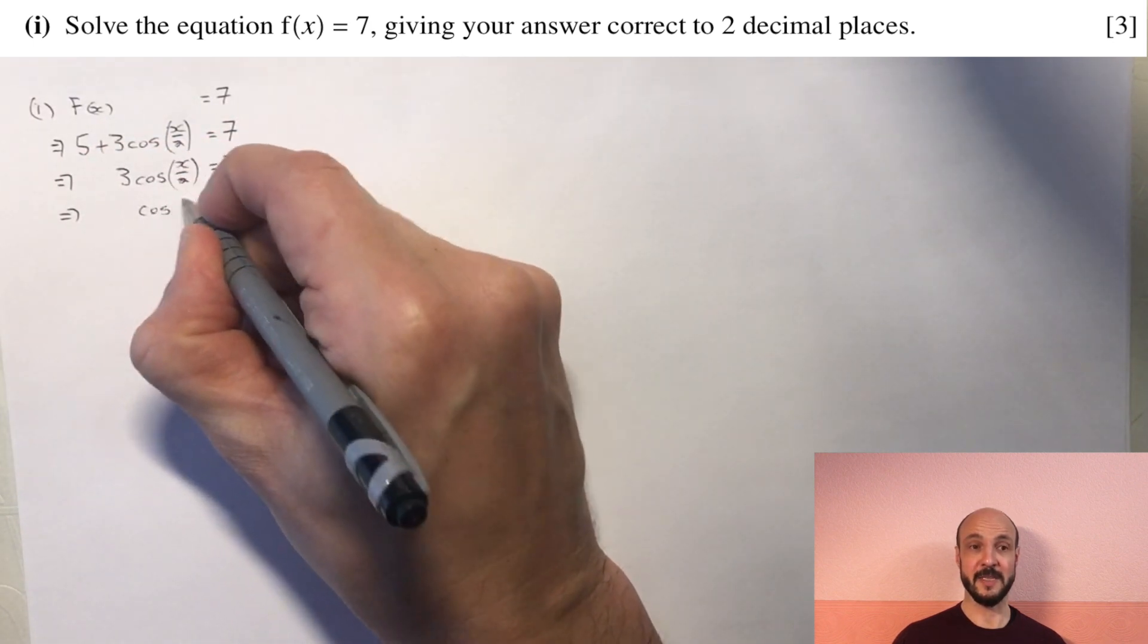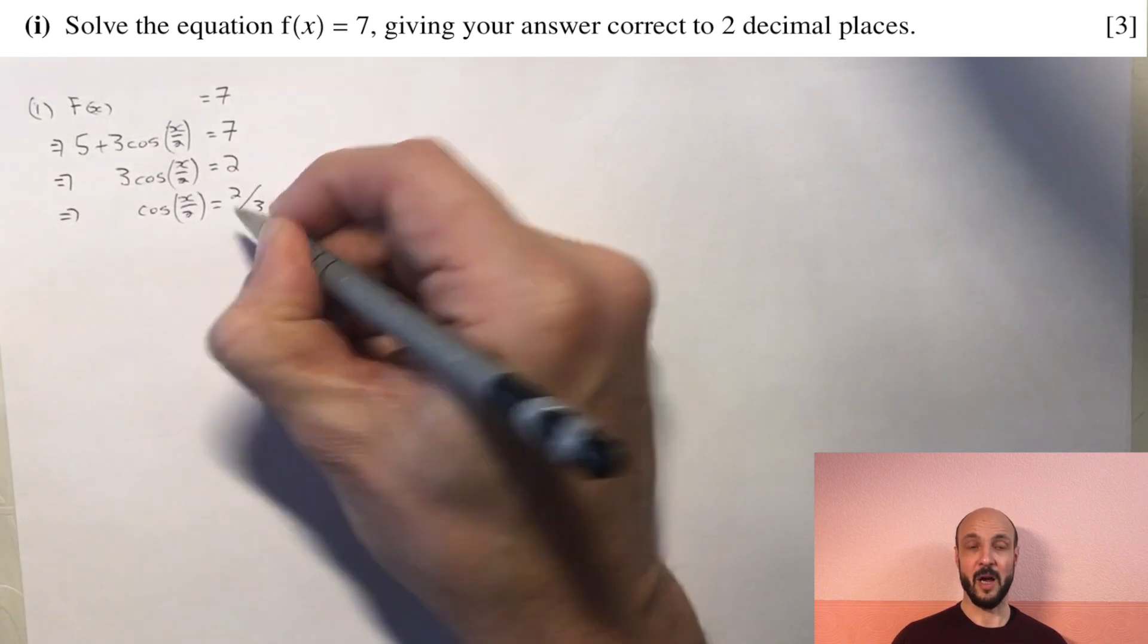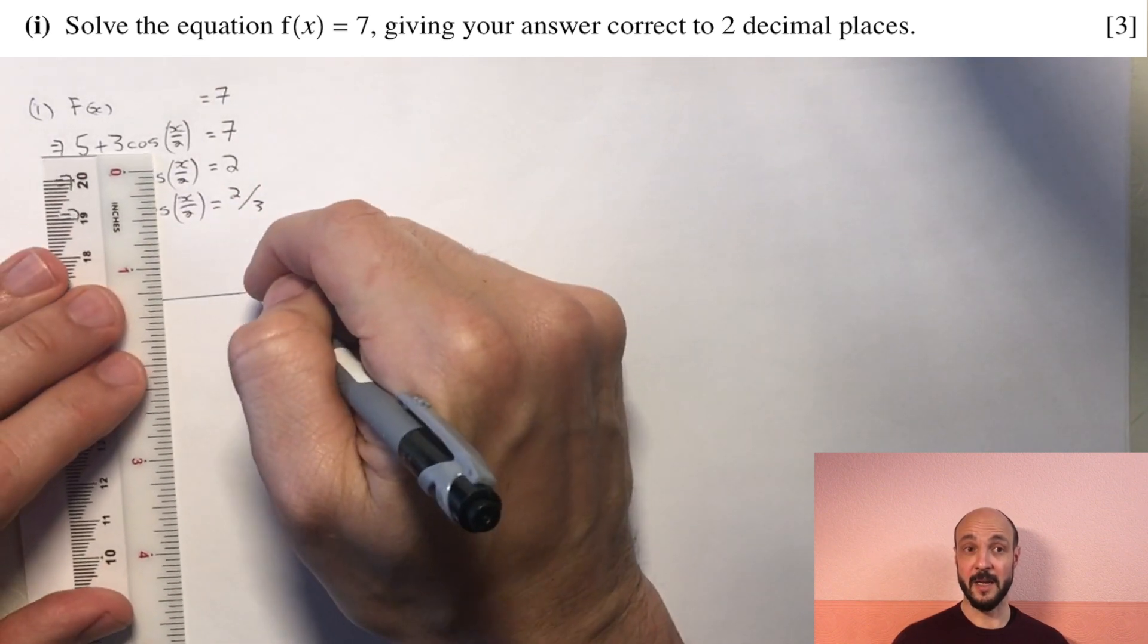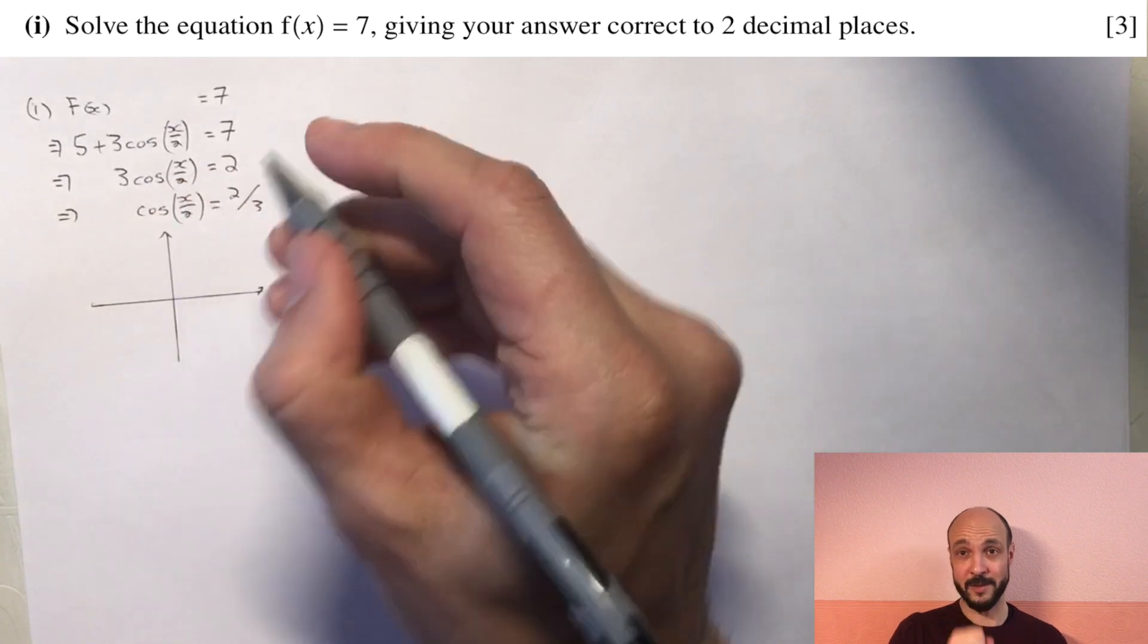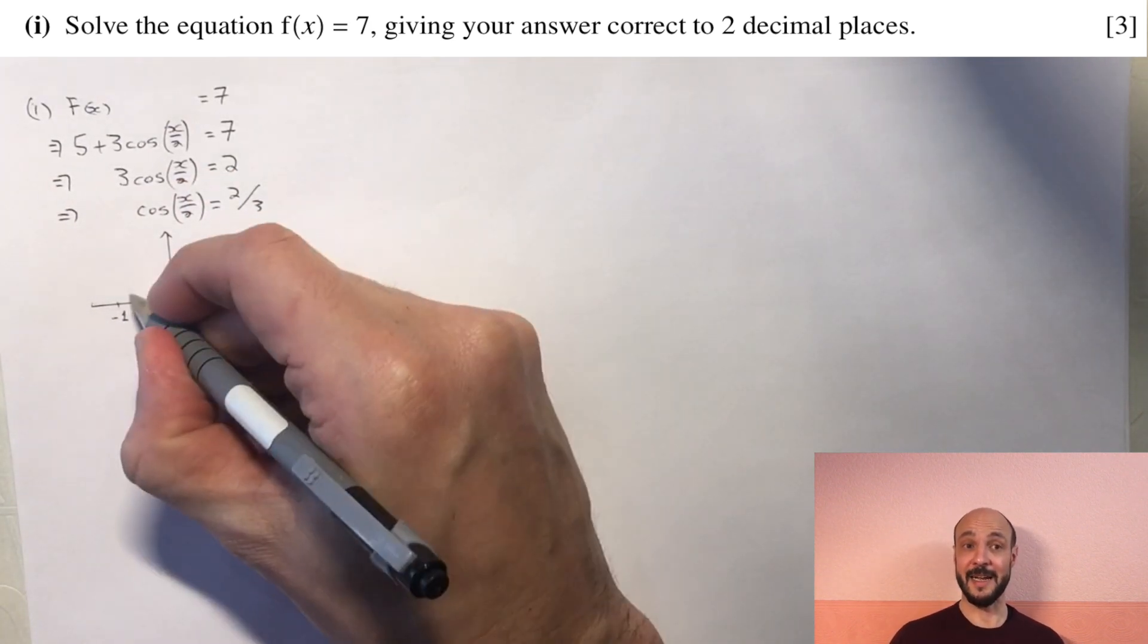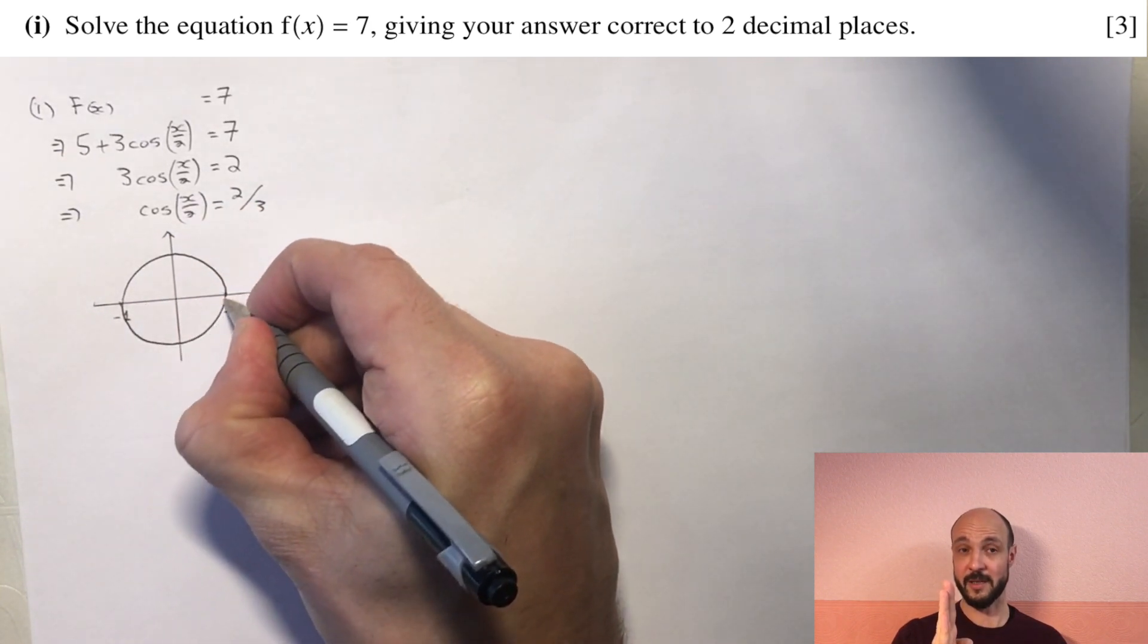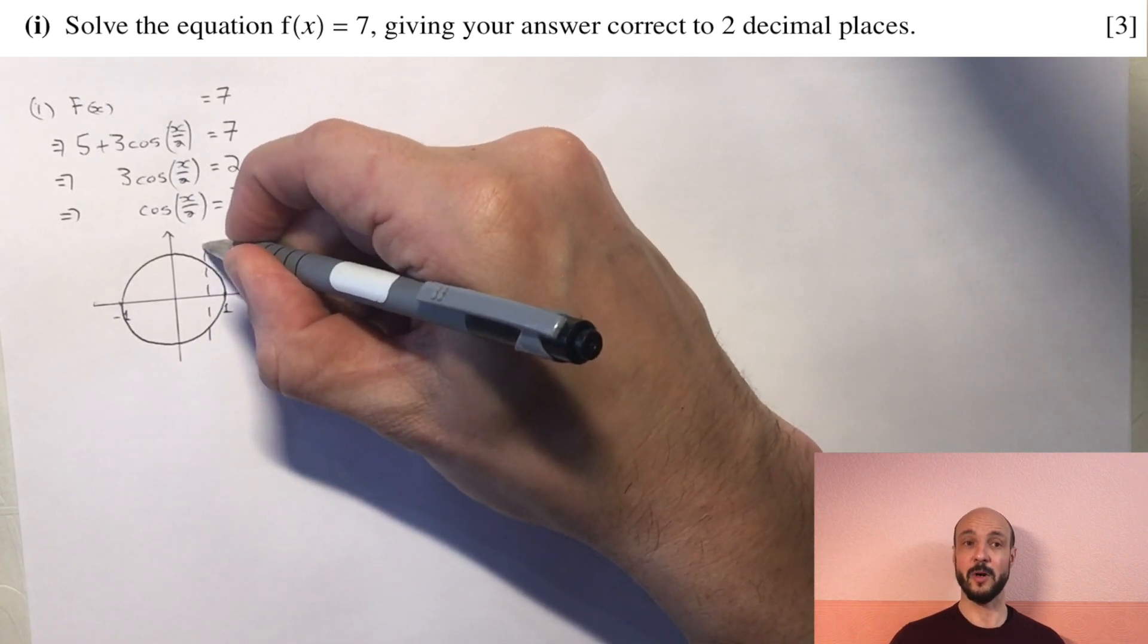Now if we stop at this stage and draw a little graph with a unit circle, our cosine is our horizontal distance from the origin. So if cosine of x over 2 equals 2 over 3, we can imagine a line 2 thirds of the way from the origin to the right hand side of the circle.